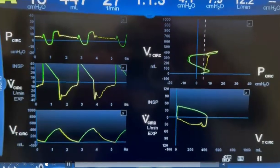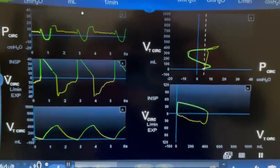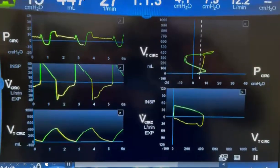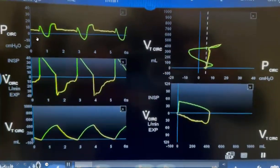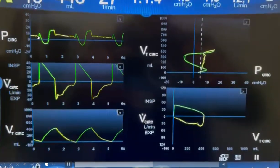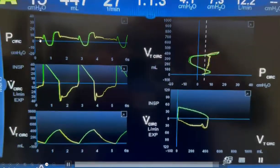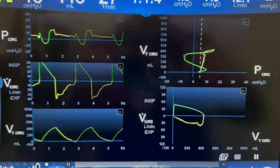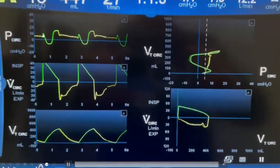The targeted tidal volume was 450. This is the start of inspiration. You can see slight negative deflection. The machine is triggered once, and the pressure goes up to around 10 centimeters of water.